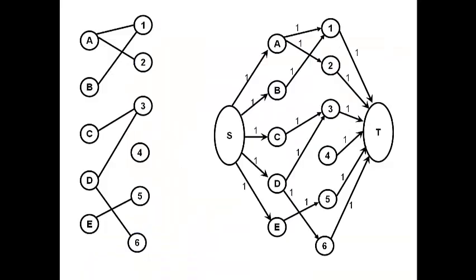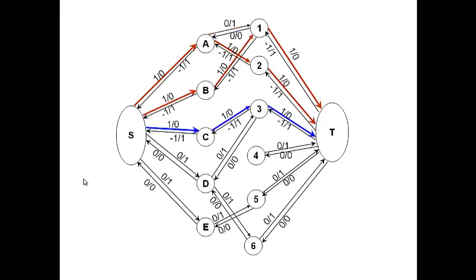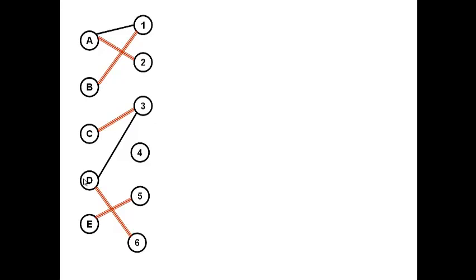For this question, we have a bipartite graph and we need to find the maximum matching. Maximum matching means the set of edges from this bipartite graph — we want the largest number of edges such that every vertex in this graph is connected to at most one of those edges.